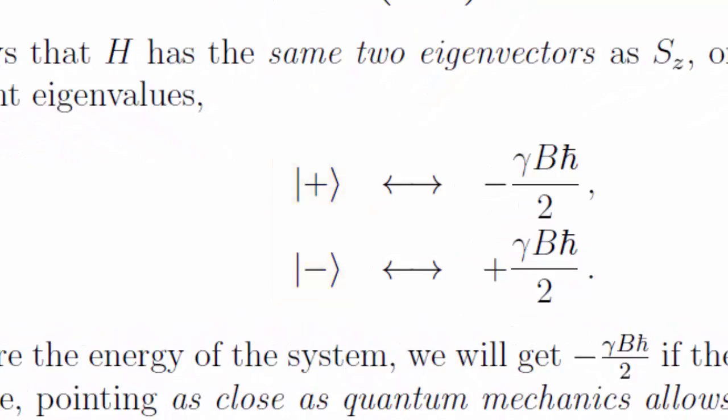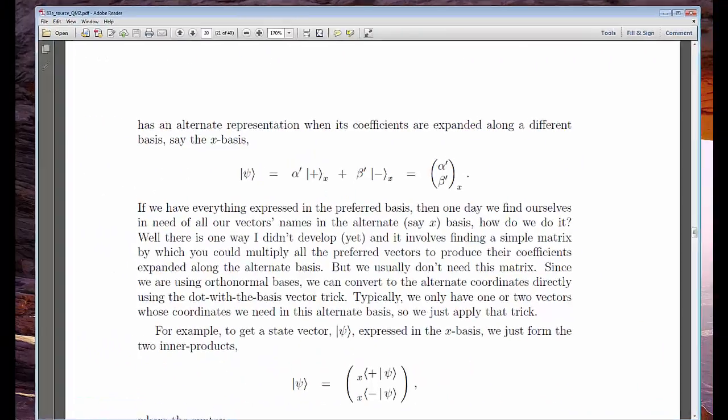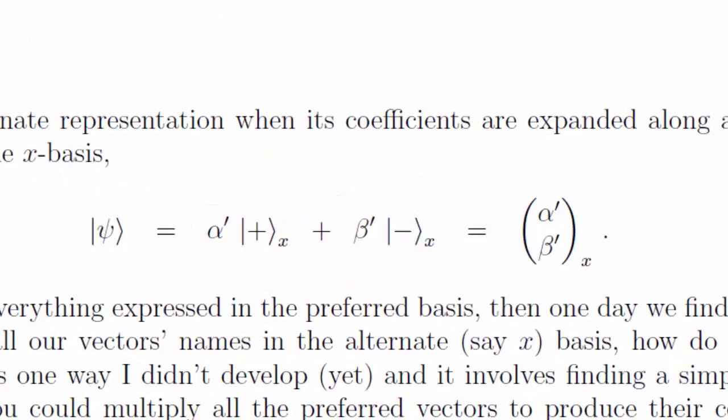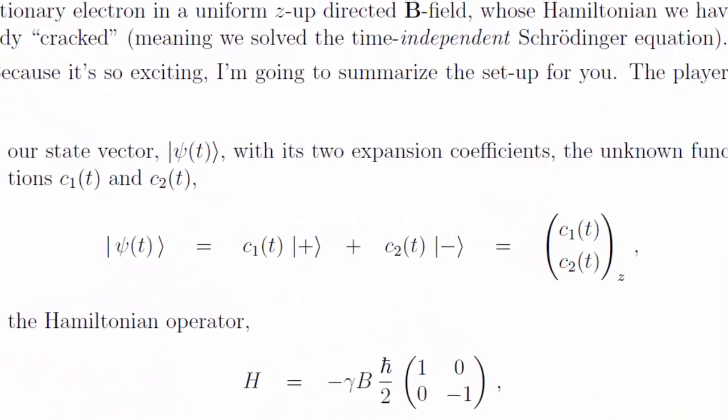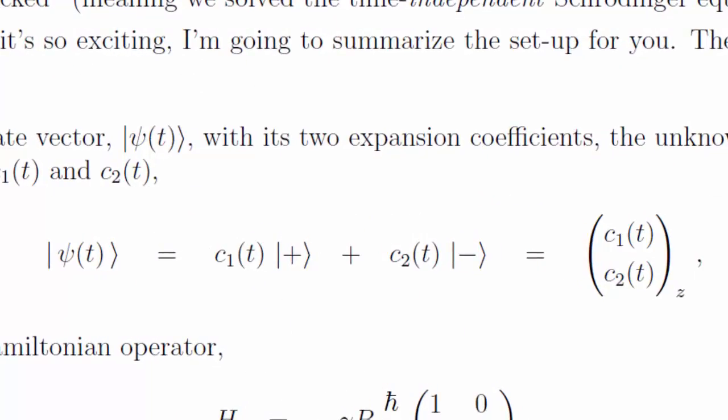Well, what about time evolution? Remember how any vector in our state space can be expanded along an observable's basis? Well, that's still true. Take any state vector. We can express it as a superposition of the energy eigencats. But now there's something new. Since we're allowing the states to evolve in time, the expansion coefficients must be functions of time, functions that for the time being are unknown.